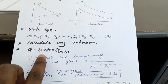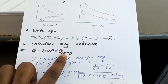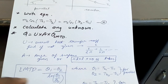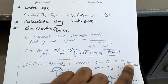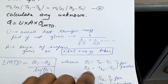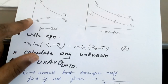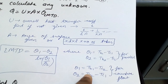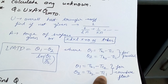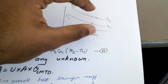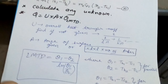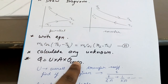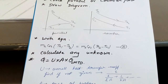Once you have U, A, and θ_LMTD, you can find the total heat transfer. The LMTD formula is θ_LMTD = (θ1 − θ2) / ln(θ1 / θ2). The values of θ1 and θ2 differ for parallel and counter flow. For parallel flow: θ1 = TH1 − TC1 and θ2 = TH2 − TC2. For counter flow: θ1 = TH1 − TC2 and θ2 = TH2 − TC1. Using the appropriate values you can find the overall heat transfer occurring in the heat exchanger.